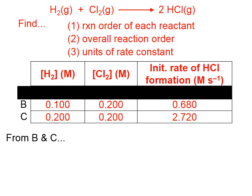Here's what we do. We say, okay, in going from B to C, the hydrogen concentration doubled. And what did that do to the rate? We look on the right, and it increased, you can see,